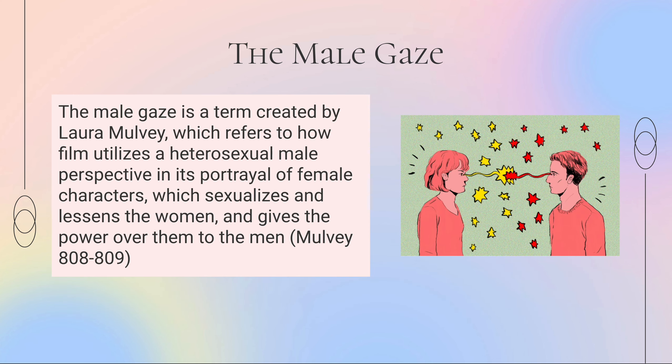In order to understand how classic Hollywood films like Psycho blatantly objectify female characters, it's really important to note how the male gaze works. The male gaze was a term created by Laura Mulvey, a revolutionary film theorist and critic. Mulvey argues that society is structured to benefit the patriarchy and that film positions female characters as only objects for heterosexual male desire.